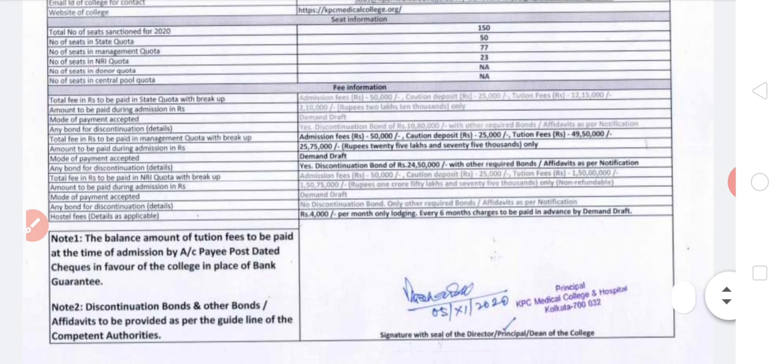Now coming to the fees information, which is the most important part. Looking at the fee structure for the state quota: the total fees to be paid — the admission fees will be ₹50,000, caution deposit or security money will be ₹25,000, and the entire tuition fees is ₹12,15,000, which when divided semester-wise comes to ₹1,35,000 per semester. The amount to be paid during admission is one semester plus admission fees plus caution deposit: ₹1,35,000 + ₹50,000 + ₹25,000 = ₹2,10,000.